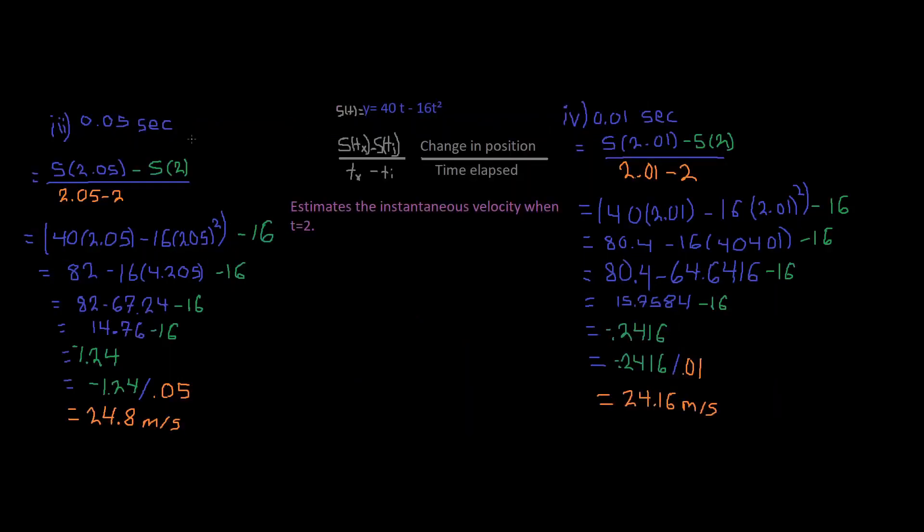Now we have this next problem which says 0.05 seconds. So we add that to 2, so it would be 2.05 minus 2, and we plug that into our function of s, and we already know this is negative 16. We solve for this and end up getting negative 1.24, then we divide that by 0.05, gives us 24.8 meters per second. And this should be negative, so let me fix that.